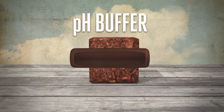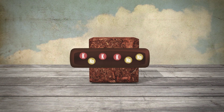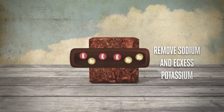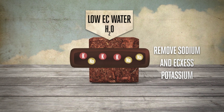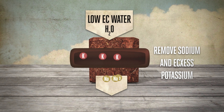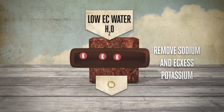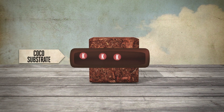Coco has similar spaces between its fibres, but these are already filled with potassium and sodium. This sodium and excess potassium needs to be removed by washing the coco thoroughly with clean, low EC water. This treatment should be done by the supplier making coco substrates from coco fibres.